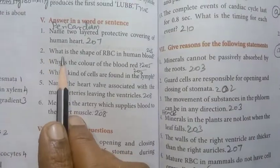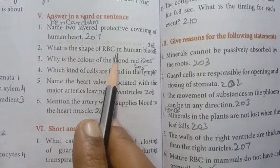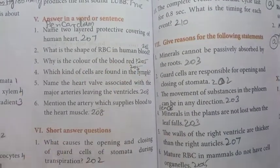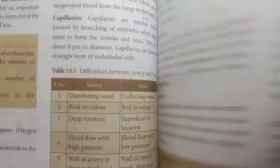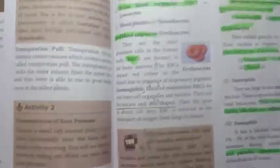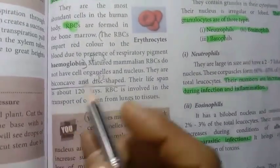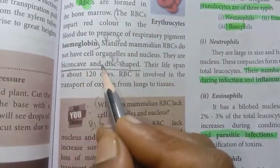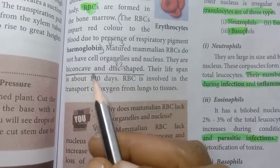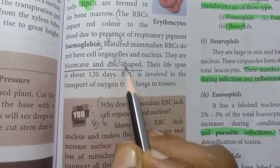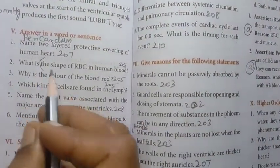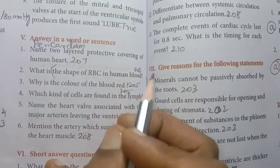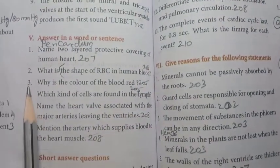Then second one: what is the shape of RBC in human blood? Shape of RBC, biconcave. Page number 205, biconcave and disc-shaped. The shape of RBC in human blood is biconcave and disc-shaped.